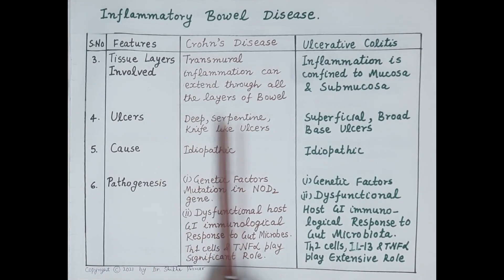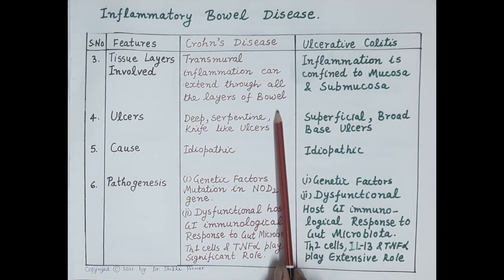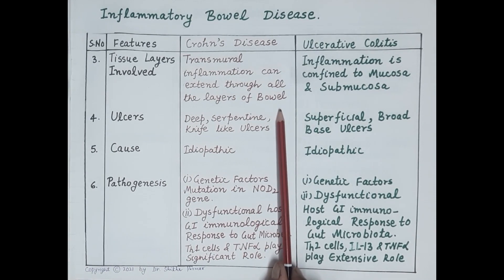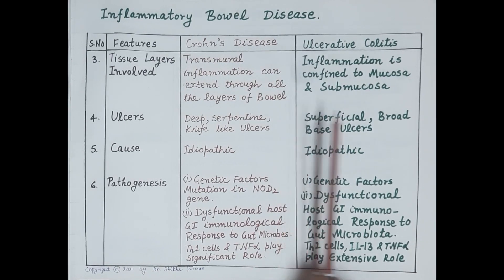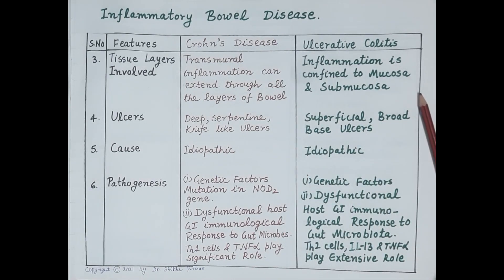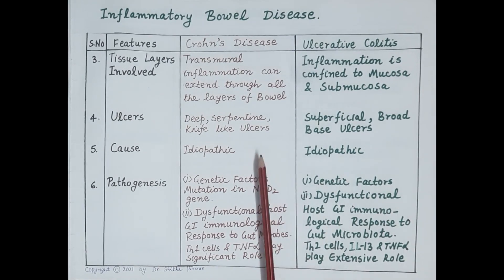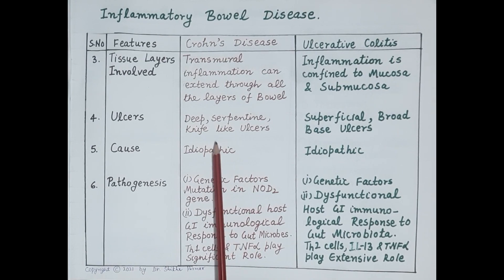The next feature is the tissue layer involved. In Crohn's disease, inflammation is transmural — it can extend from the mucosa and submucosa to include the muscle layer and serosa, passing through all layers of the bowel wall. In ulcerative colitis, inflammation is confined to the mucosa and submucosa.